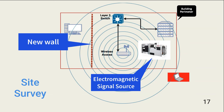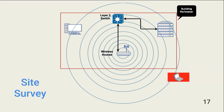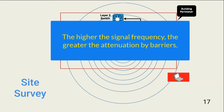Another goal of the survey is to identify areas where the organization does not want to provide a strong signal. For example, a threat actor sitting outside the building in the parking lot — placement and tuning of access points can eliminate or severely attenuate the signal strength available to the threat actor. Another consideration is doing site surveys after replacement of existing access points with ones that support higher frequency signals, since higher frequencies have a harder time getting through barriers like walls.